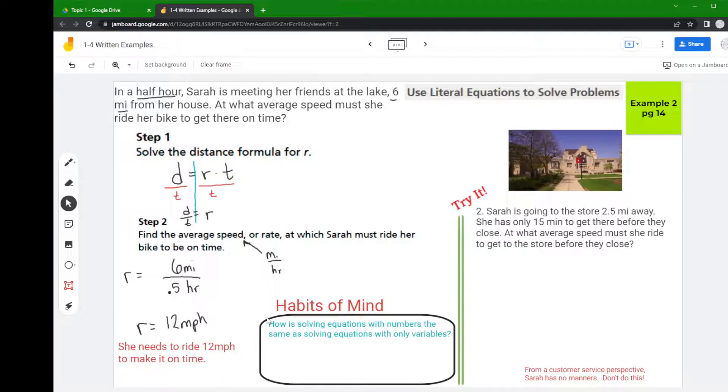So in application this is the minimum that she needs to ride without any type of interruption. All right, so then if I look at the try-it, it says Sarah is going to a store that's two and a half miles away and she only has 15 minutes to get there before they close.